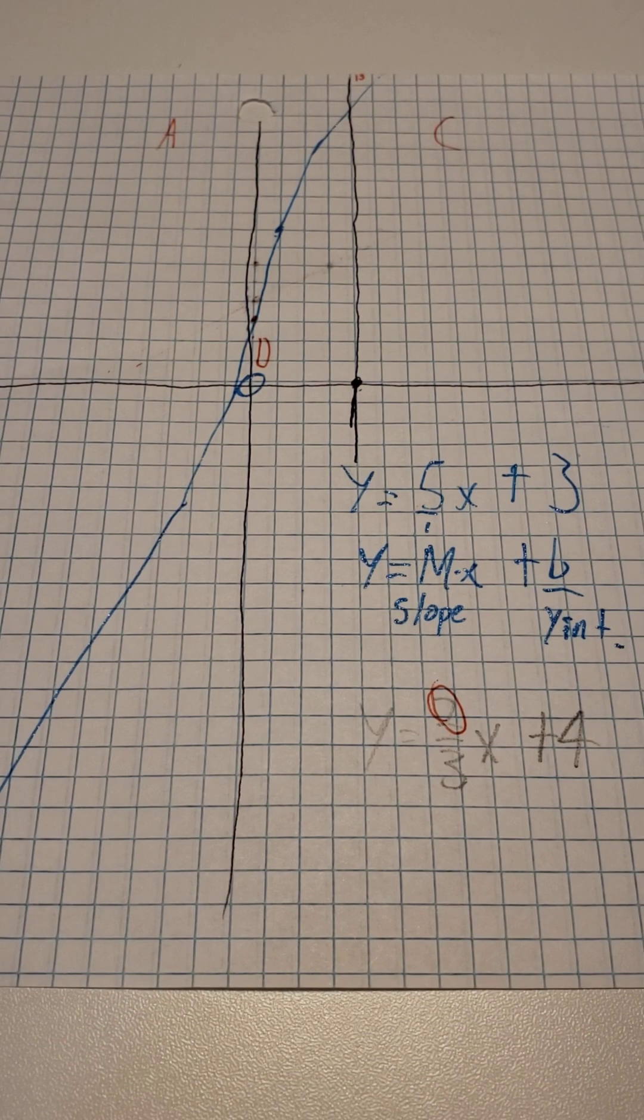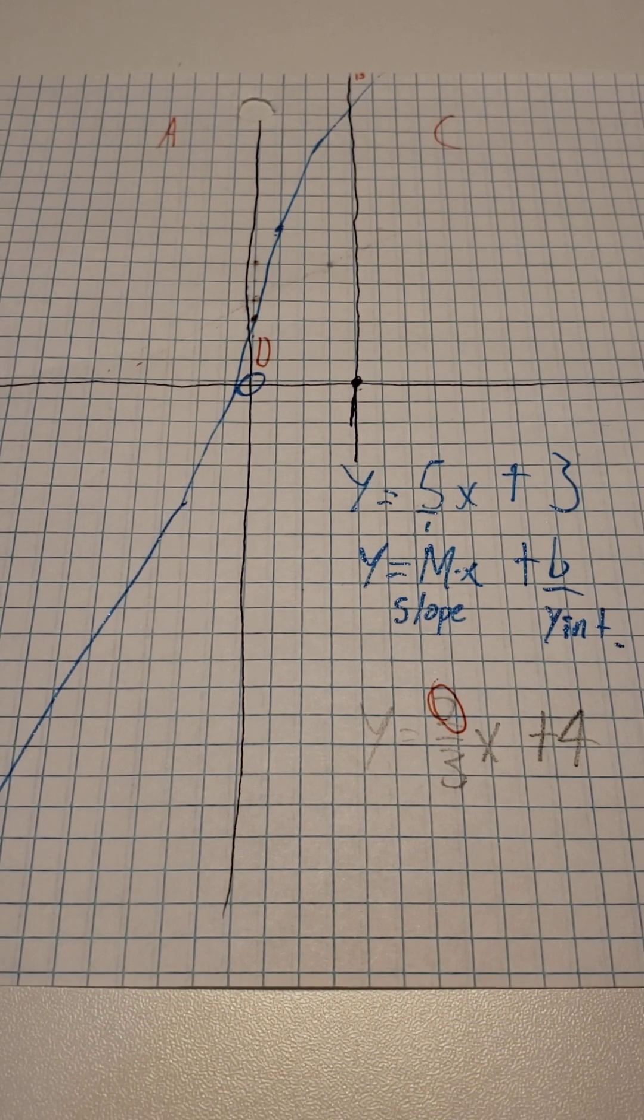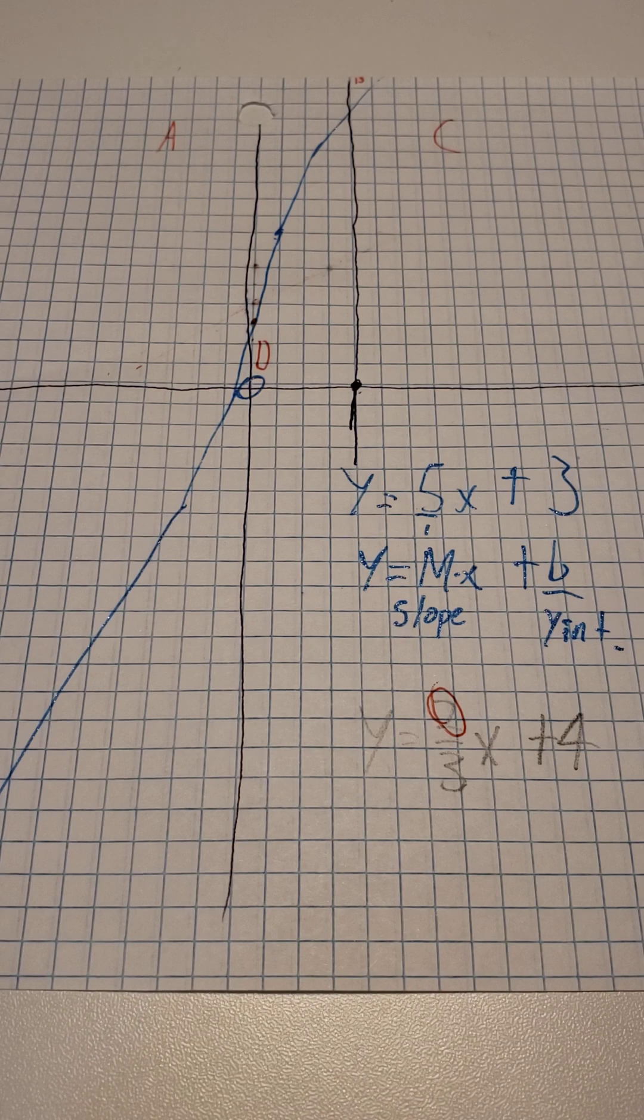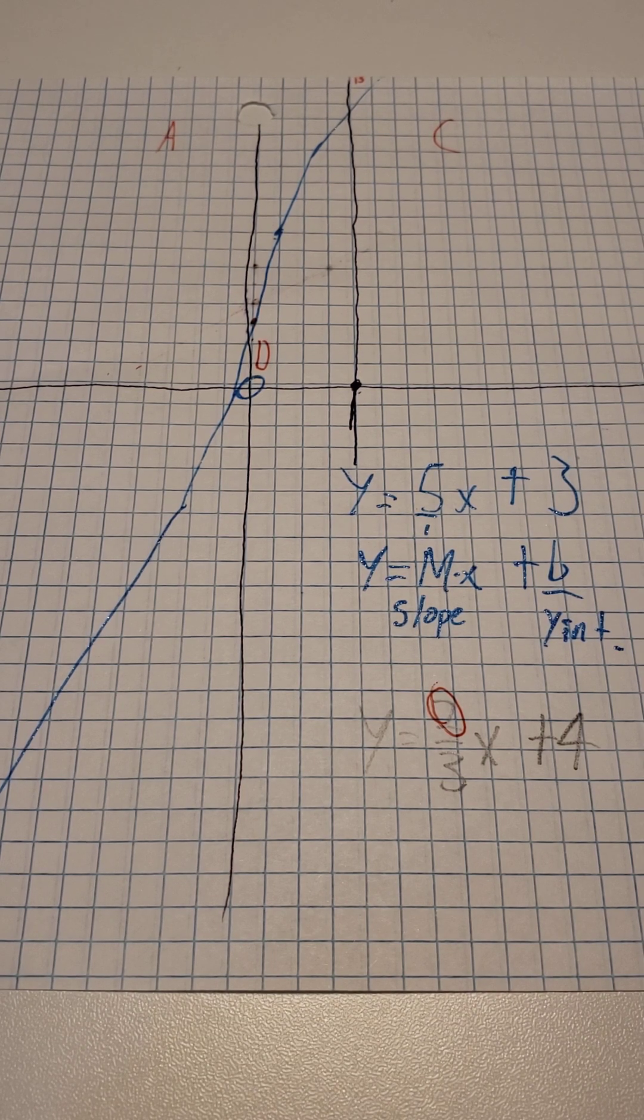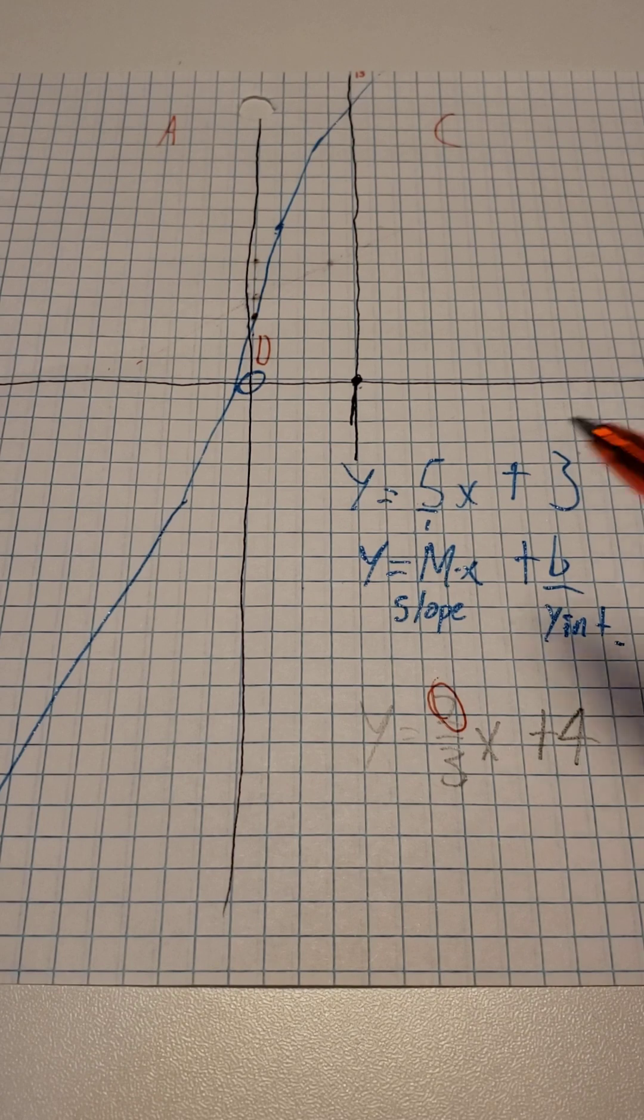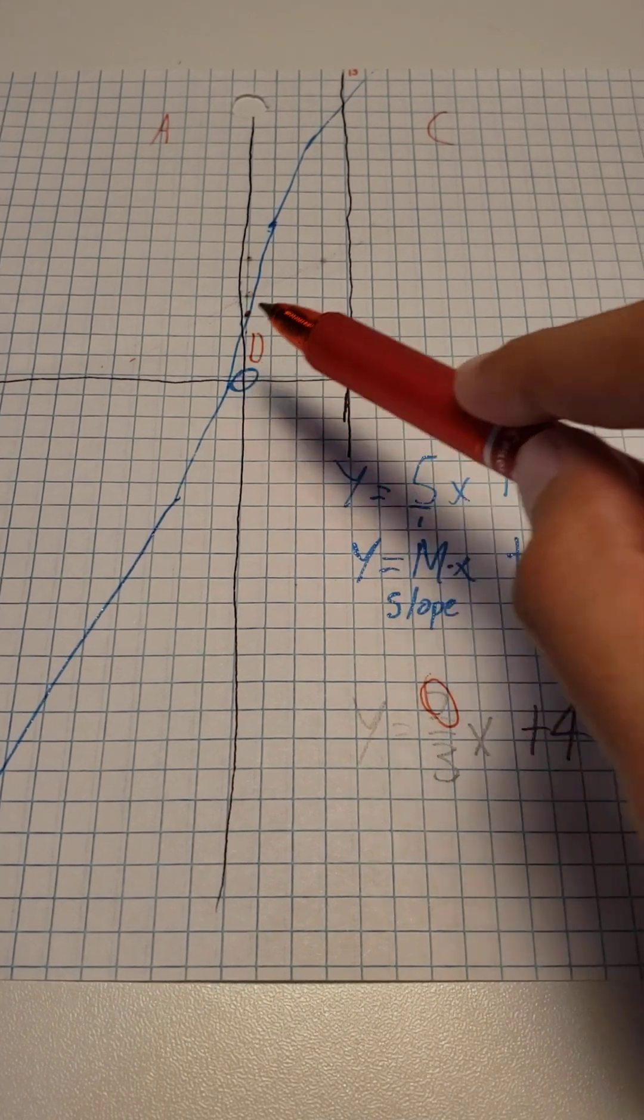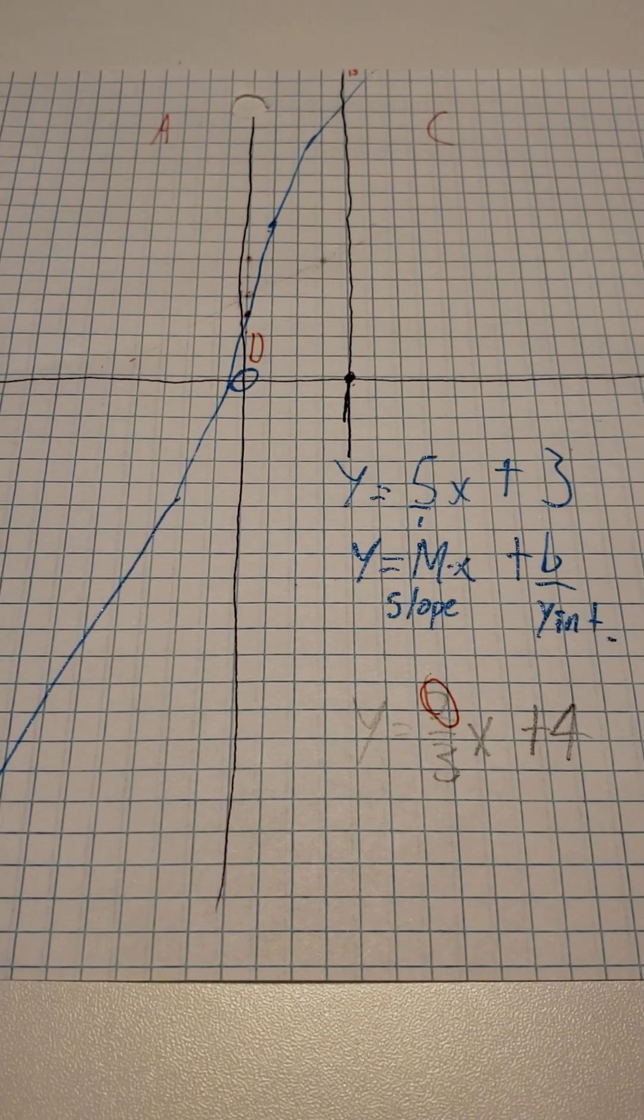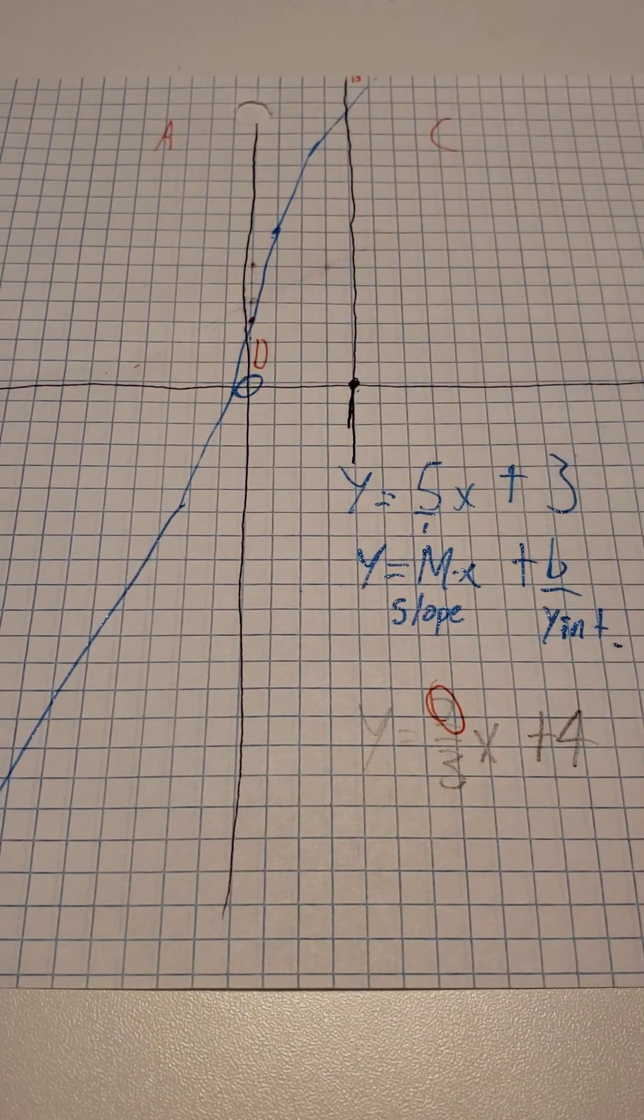And to finally simplify this system of equations, we need to know where do the system of equations match up? To do this, it's always easier to use the origin. So, you have to substitute 0, 0 into your equation. Let's first do it on this one.